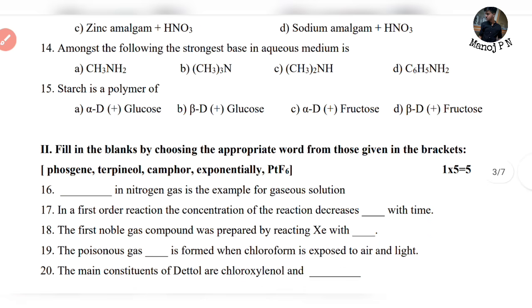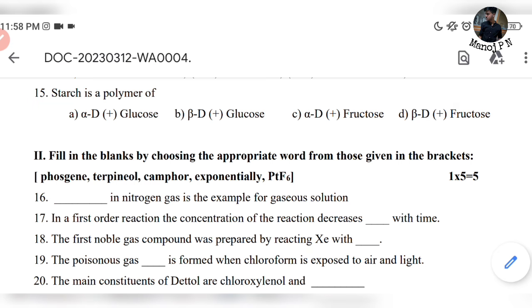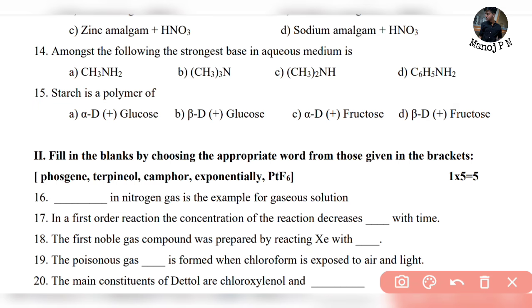Question 15: starch is the polymer of dash. Starch is the polymer of glucose — alpha D glucose. That will be your answer.